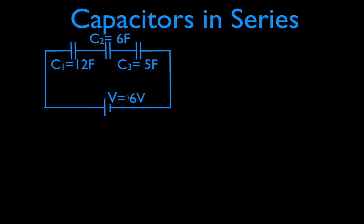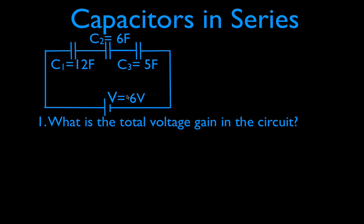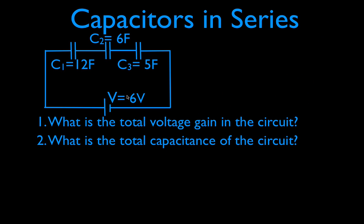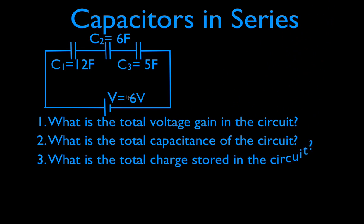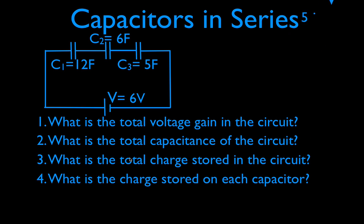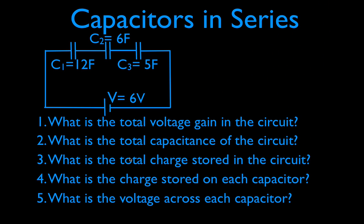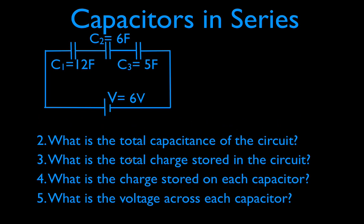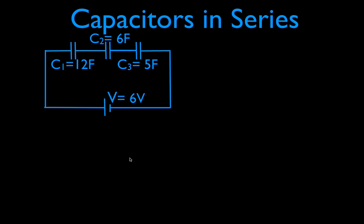We are going to, in 10 minutes or less, do the following five things. Number one, we're going to figure out what is the total voltage in the circuit. Number two, what is the total or the equivalent capacitance — I mean the same thing when I say total and equivalent capacitance. And then we're going to get the total charge. These are the things that I like to call the big three: the total voltage, the total or equivalent capacitance, and the total charge. Then after that, we can get the charge stored on each capacitor, and then we can get the voltage drop, or the potential difference, across the plates of each capacitor. We're going to do all five of those things in 10 minutes or less.